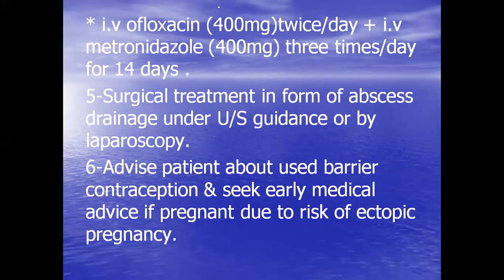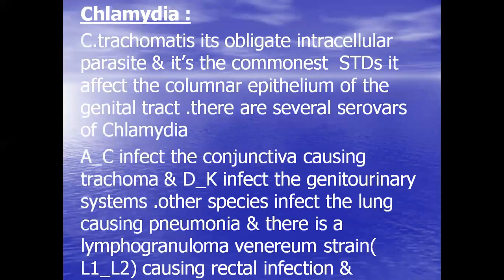Now let's discuss the causes of PID. Chlamydia trachomatis is the most common organism causing pelvic inflammatory disease. It is an obligate intracellular parasite and the commonest STD, affecting the columnar epithelium of the genital tract. There are several serovars: A to C infect the conjunctiva causing trachoma; D to K infect the genitourinary system; other species infect the lung causing pneumonia; and the lymphogranuloma venereum strains L1 to L3 cause rectal infection.